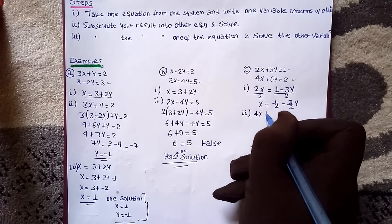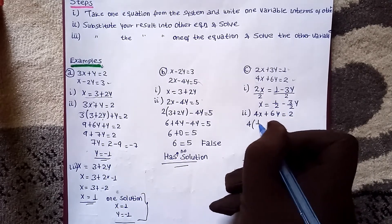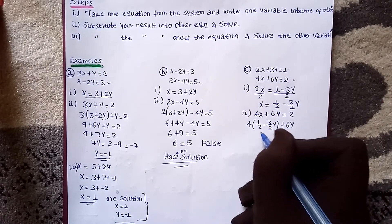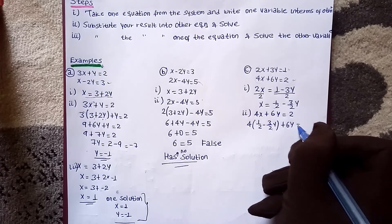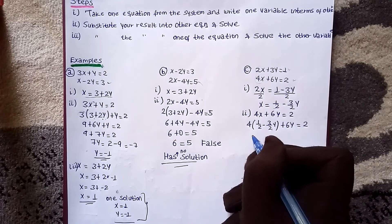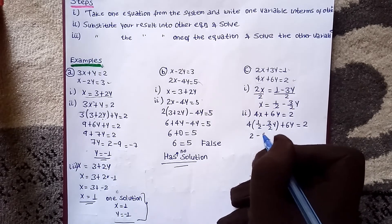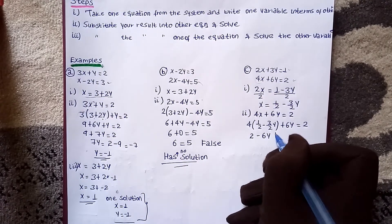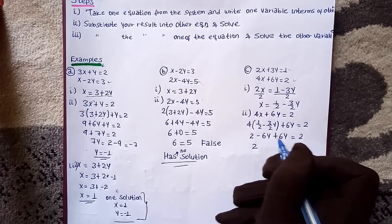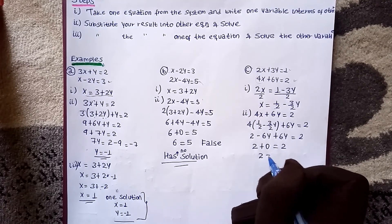4x plus 6y equals 2. Substituting x equals one-half minus three-halves y into the second equation: 4 times one-half minus three-halves y, plus 6y equals 2. This gives 2 minus 6y plus 6y equals 2, so 0 equals 0, and 2 equals 2 — which is true.